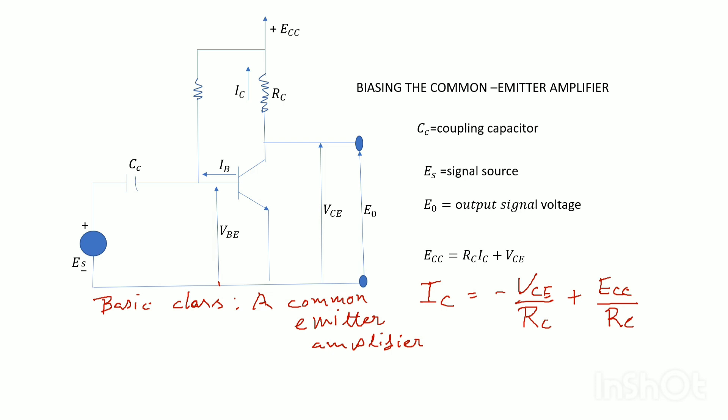In this diagram, we see that the superimposed line is referred to as the load line. We will get the quiescent operating point Q. In the quiescent operating point Q, we get the straight line equation: IC equals Vce divided by Rc plus Ecc divided by Rc.